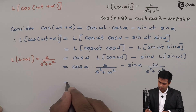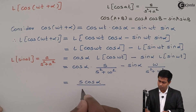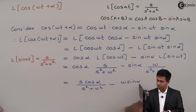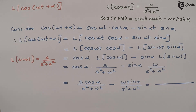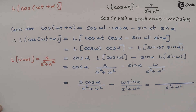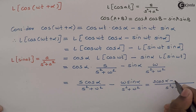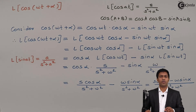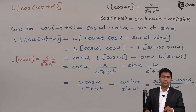Multiplying through, we get s·cosα/(s² + ω²) minus ω·sinα/(s² + ω²). Taking the common denominator, we get (s·cosα − ω·sinα)/(s² + ω²). That is the Laplace transform of cos(ωt + α), obtained by using the standard expansion. Thank you.